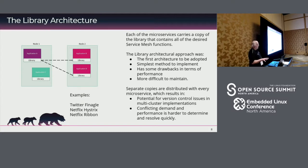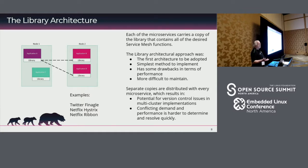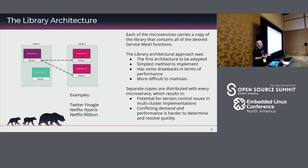The library is actually the most simple implementation. It gets injected into each one of the containers, and all communications go from library to library, not container to container. It was the original to be adopted and was pretty successful. But it had pain points — most difficulty in terms of updating or upgrading that library, because you had to know who all used them. The version control was a little dicey, and it didn't include things allowing you to monitor traffic shaping. Companies involved in it were Twitter's Finagle and Netflix's Ribbon.